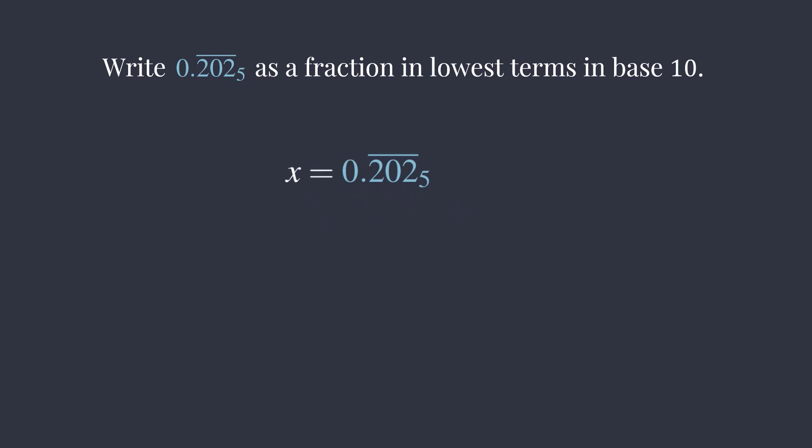We can let x be this decimal. Label it as our first equation. Since there are 3 digits repeating, we can multiply both sides of the equation by 1,000 base 5. So the right side of the equation becomes 202.202 base 5 with 202 repeating. Label this as equation 2.